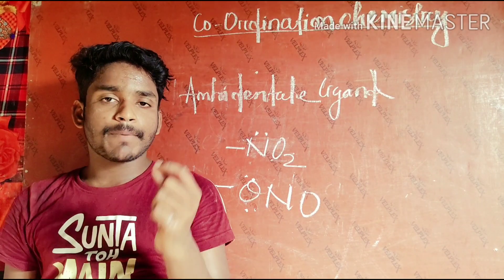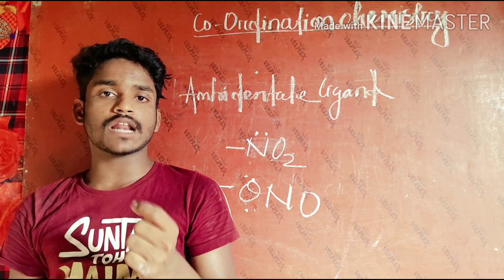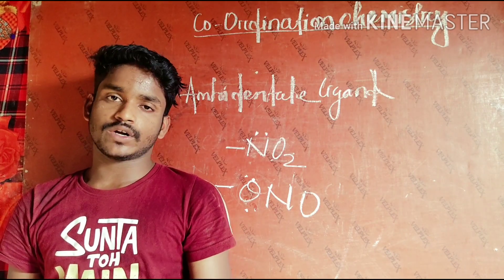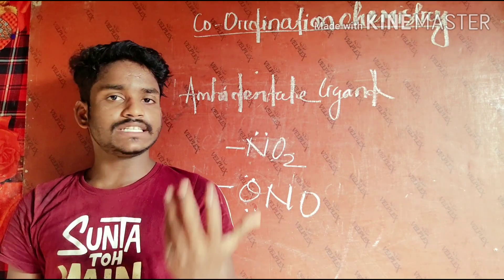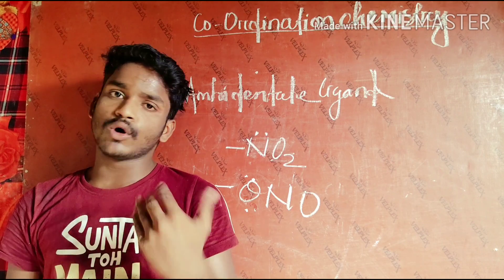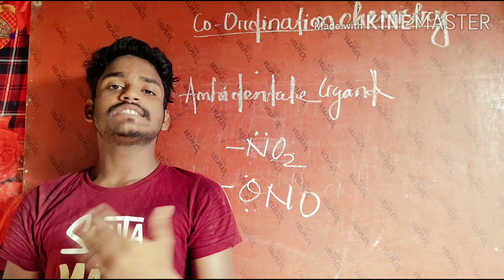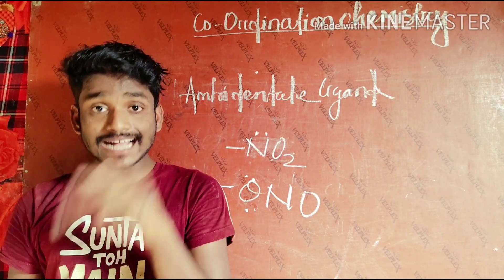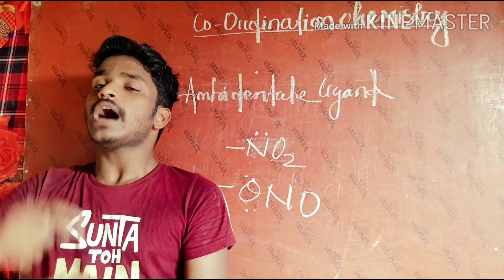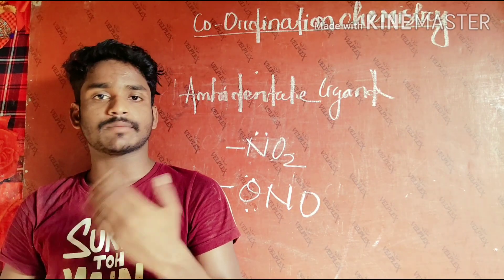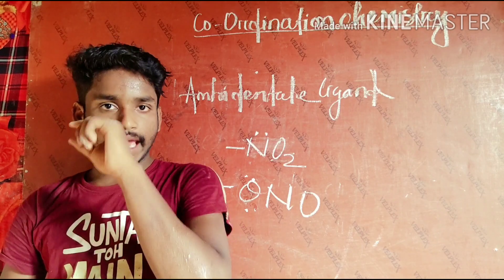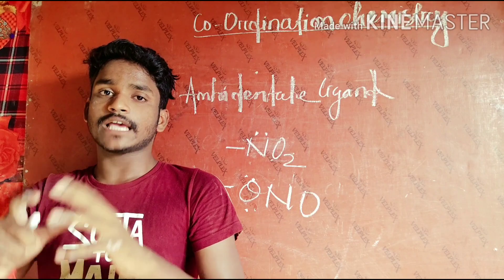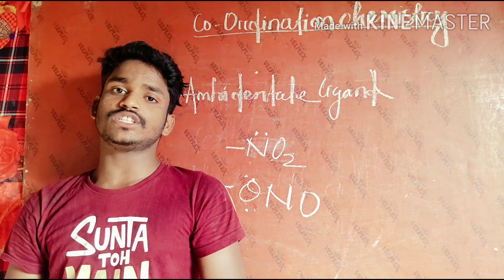To summarize: if a ligand donates one pair of electrons to the central metal atom it is monodentate; if it donates two pairs it is bidentate; if more, it is polydentate. A chelating ligand forms a ring-like structure and the presence of this ligand makes the complex more stable — this is the chelating effect.